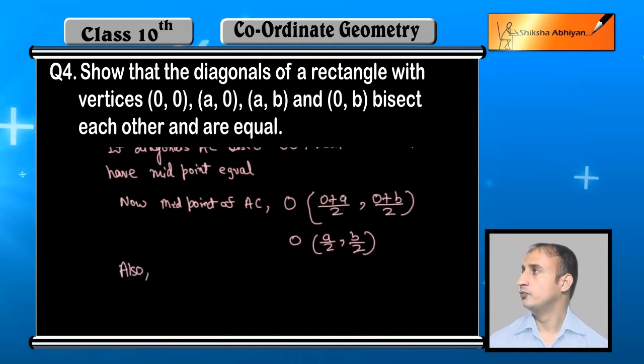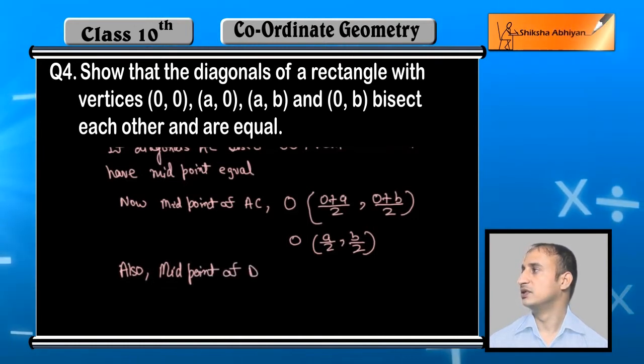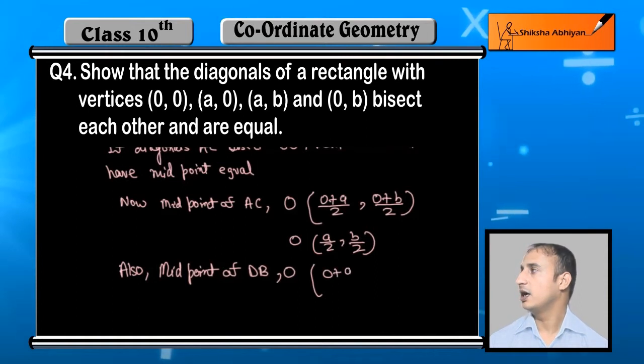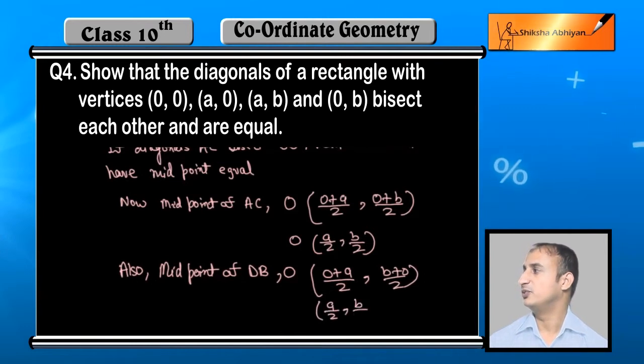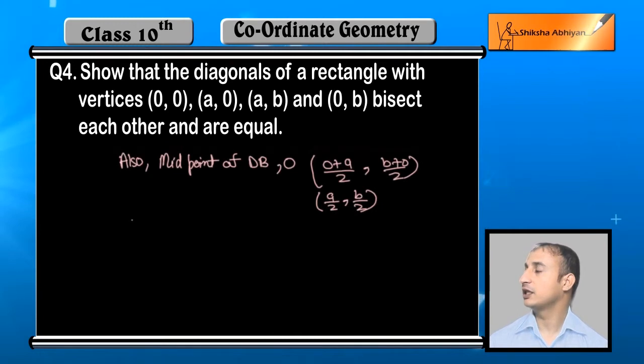Similarly, find the midpoint of DB. So midpoint of DB - again apply the midpoint formula. This will become (0+a)/2, (b+0)/2. So we can solve: a/2 and b/2.